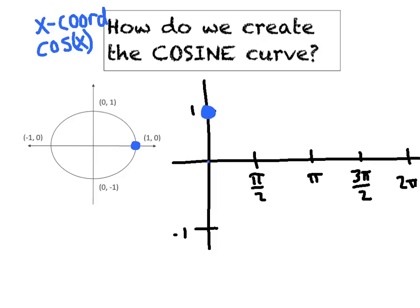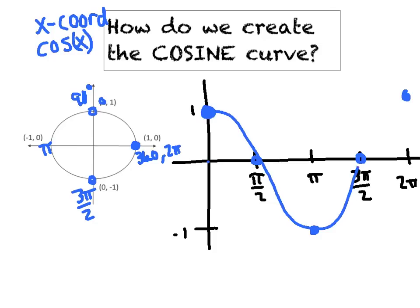I'm starting way up here at height 1. At 90 degrees, also known as pi over 2, the x-coordinate is zero — that's why we have a root. At pi or 180 degrees, the x-coordinate is negative one. At 270 degrees, also known as 3 pi over 2, the x-coordinate is again zero. Then at 360 degrees, also known as 2 pi, the height is one again. We connect that with a nice smooth curve, and there's your generic basic cosine curve.